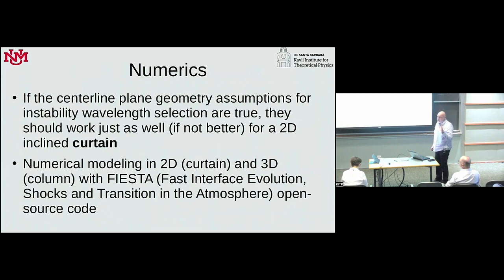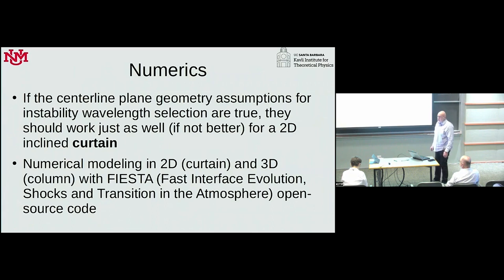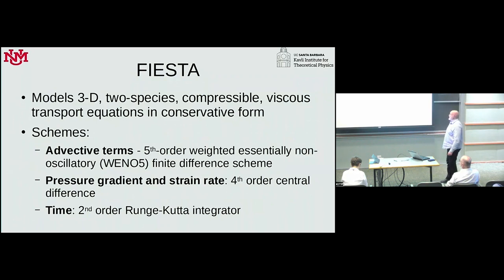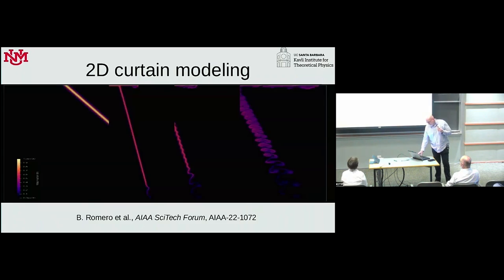The big assumption here is that everything can be explained with what is essentially a two-dimensional theory. We don't have the luxury of a fully two-dimensional experiment, only quasi-two-dimensional in our three-dimensional world. But in numerics, we can do a two-dimensional curtain to replace the three-dimensional column. Let me introduce our in-house code FIESTA, which can be used to model two-dimensional and three-dimensional mixing. I'll refer you to the already published papers for a full description of this code.